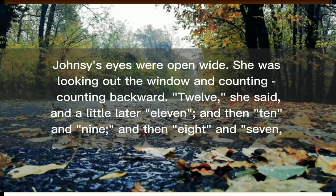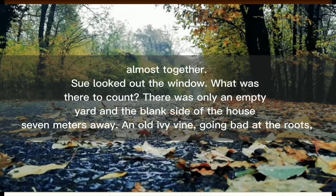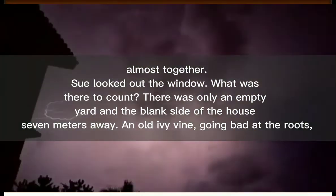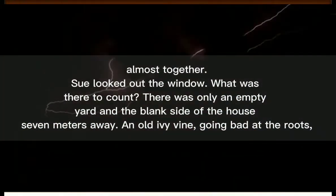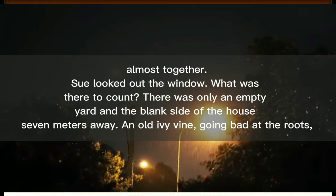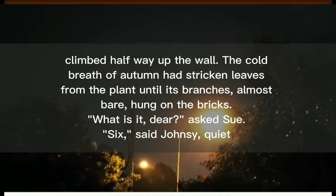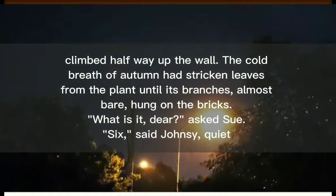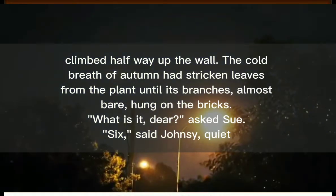Jansi's eyes were open wide. She was looking out the window and counting — counting backward. '12,' she said. And a little later, '11, and then 10, and 9, and then 8, and 7.' Sue looked out the window. What was there to count? There was only an empty yard and the blank side of the house, 7 meters away. An old ivy vine, going bad at the roots, climbed halfway up the wall. The cold breath of autumn had stricken leaves from the plant until its branches, almost bare, hung on the bricks.